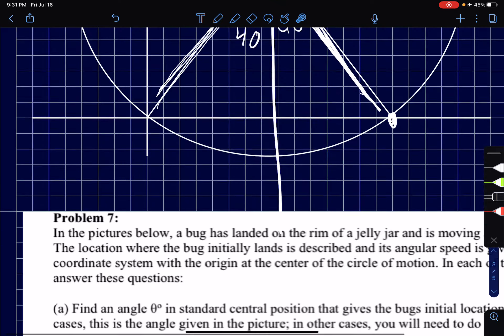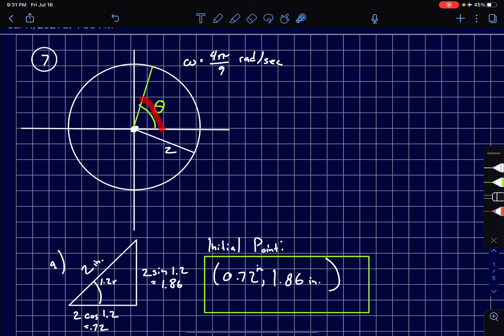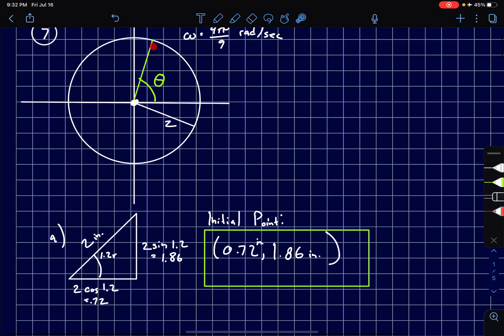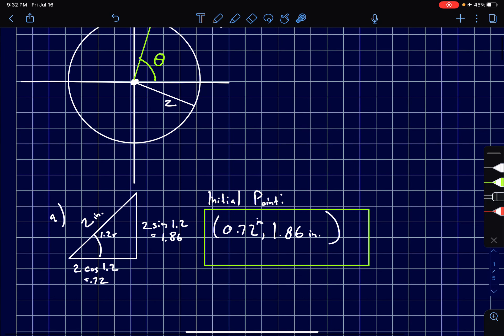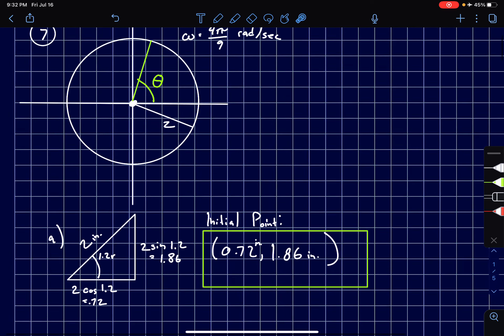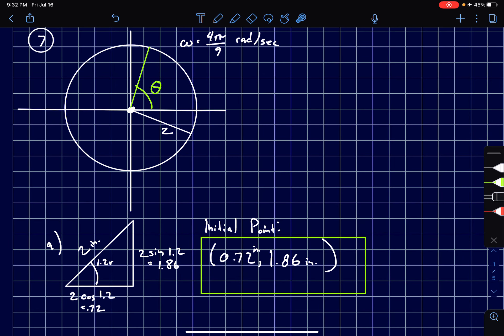So for the first part what we want to do is find an angle. We already know it's 1.2 radians and given the angular speed and the radius that we just covered, we know that it's going to start here and so we can say that the initial point is (-0.72, 1.86). How do we find that?